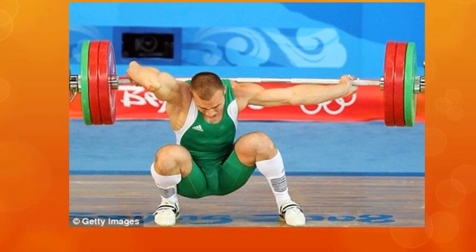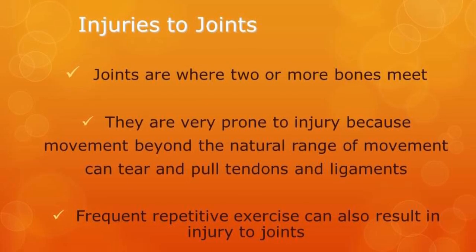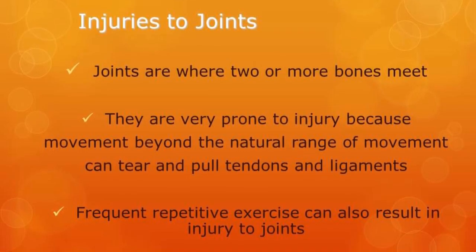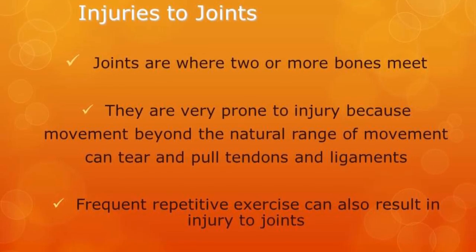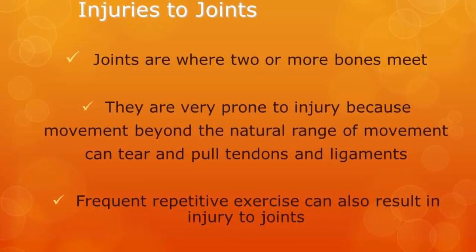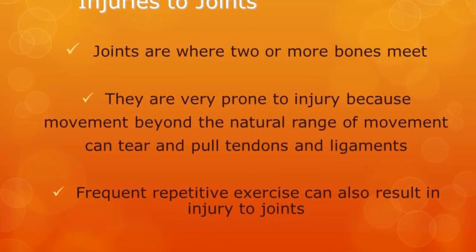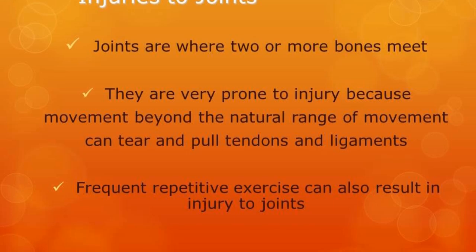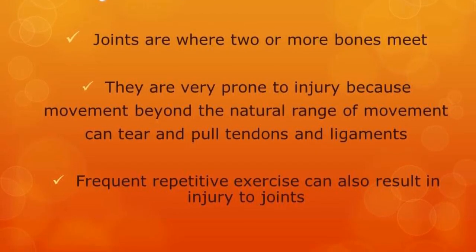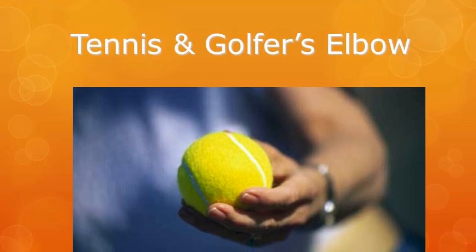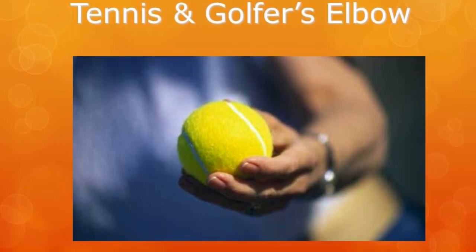Moving on to injuries to joints. Joints are where two or more bones meet and are very prone to injury, because movement beyond the natural range of movement can tear and pull tendons and ligaments — the most common joint injuries. Frequent repetitive exercise, especially starting a new training programme and doing too much too soon, puts you more at risk. The four joint injuries you need to know are tennis and golfer's elbow, dislocations, sprains, and torn cartilage.